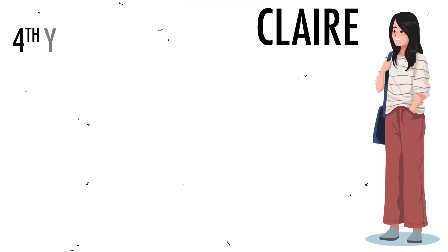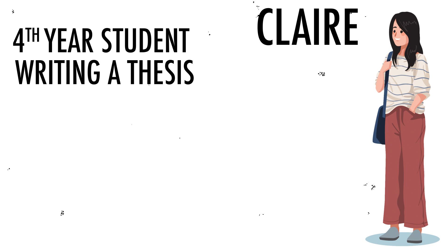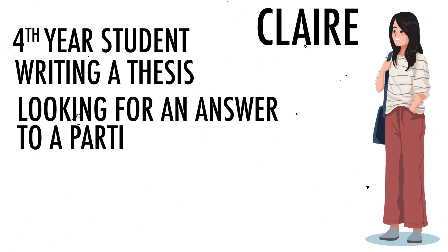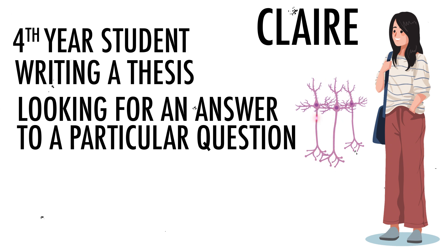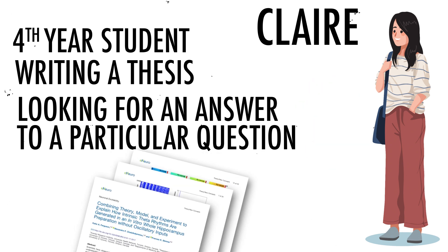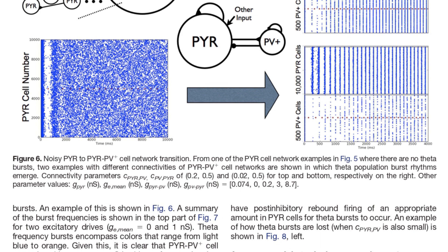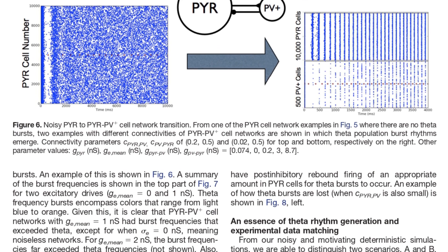Claire, on the other hand, is a fourth-year student in the middle of writing her bachelor's thesis. She's trying to understand the exact neural mechanism responsible for theta rhythm generation. She came across this paper in an attempt to find the answer, so she would read it much more carefully than Bill, diving deeper into the model structure and the discussion, scanning each section thoroughly.